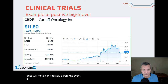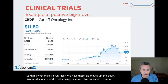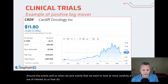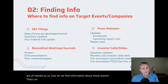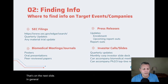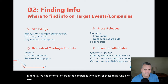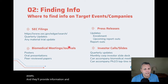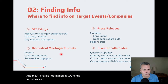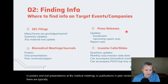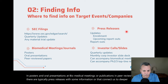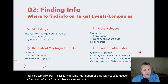So that's what makes it fun — we have these big moves up and down around the events. When we pick events we want to look at more carefully, how do we find information about them? In general, we find information from the companies who sponsor these trials. They'll provide information in SEC filings, in posters and oral presentations at biomedical meetings, or publications in peer-reviewed journals. There are typically press releases, and investor calls and slide decks that provide even more information.